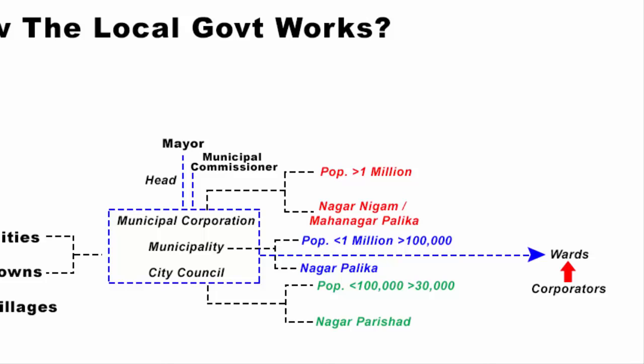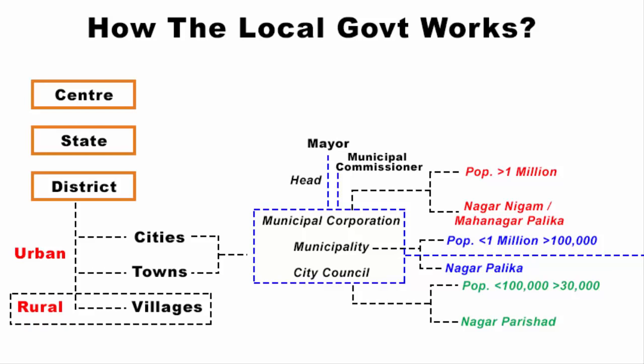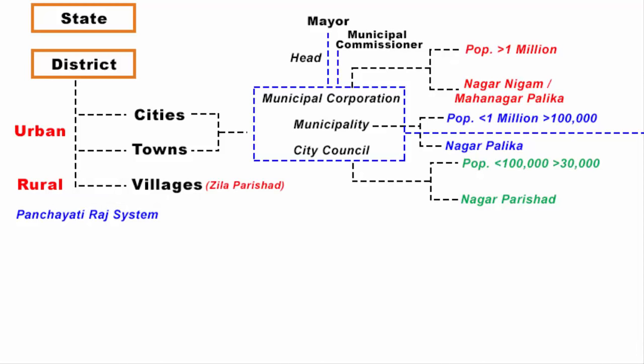This is the entire setup of a local urban government. Now let's look at the administrative setup of a rural area — this is where the Panchayati Raj system comes into the picture. In a district we have cities, towns and villages. The district level government in the Panchayati Raj system is popularly known as Zilla Parishad.